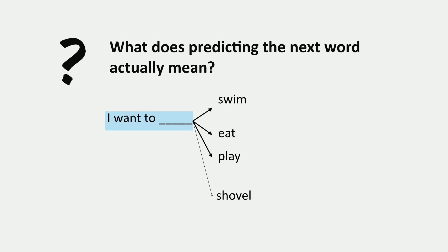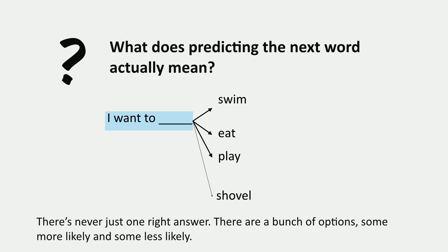Now we're going to talk about what language models really do and answer the question: what does predicting the next word actually mean? We saw this example where if we want to blank and then think about words that could come next — swim, eat, and play maybe seem pretty likely, and something like shovel seems less likely. This emphasizes a key aspect: there's never just one right answer. There are a bunch of options, some more likely and some less likely.